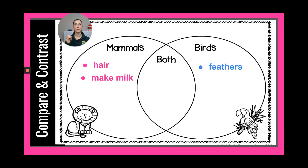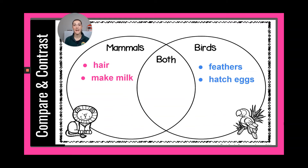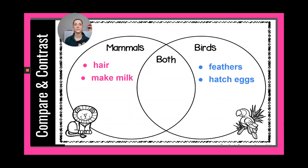What do all birds have in common when they have babies that mammals do not? They hatch eggs. Baby birds hatch from an egg. So birds hatch from eggs — mammals do not.